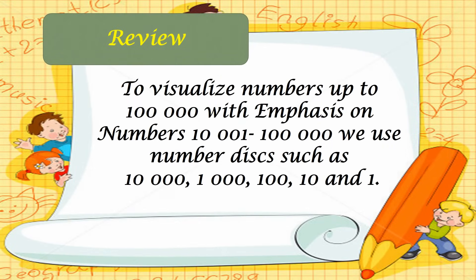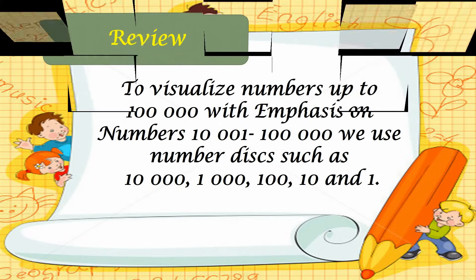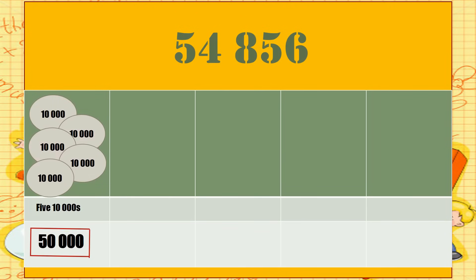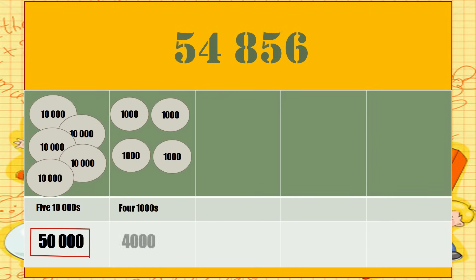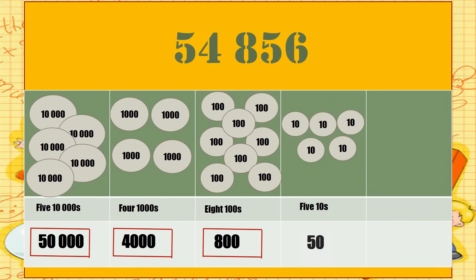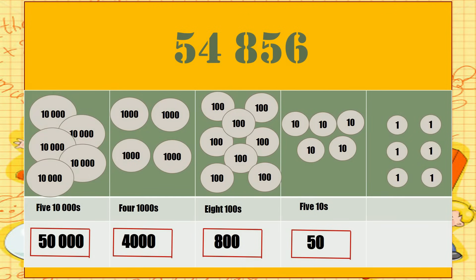Before we start, let's have a quick review. On our previous lesson, we visualized numbers emphasizing on numbers 10,000 to 100,000, and we used number disks such as 10,000, 1,000, 100, 10, and 1. For example, 54,856 has 5 ten-thousands with a value of 50,000; 4 thousands with a value of 4,000; 8 hundreds with a value of 800; 5 tens with a value of 50; and 6 ones with a value of 6.